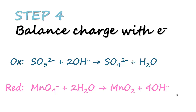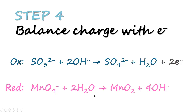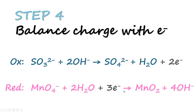For the next step we balance the charge with electrons, similar to step four of the acidic condition. For the oxidation equation, the left hand side has a total charge of −4 (−2 + −2) and the right hand side is −2, so we add two electrons to the right side to equalize. For the reduction equation, the left hand side is −1 and the right hand side is −4 (0 + −4), so we add three electrons to the left hand side to equate the charges.